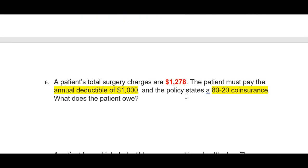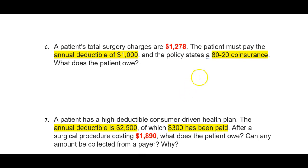For number 6, a patient's total surgery charges are $1,278. The patient must pay an annual deductible of $1,000. The policy states 80/20 coinsurance. What does the patient owe? Total surgery charges are $1,278, and $1,000 of that right off the top is going to be the deductible. So $1,000 of that is automatically the patient's responsibility.